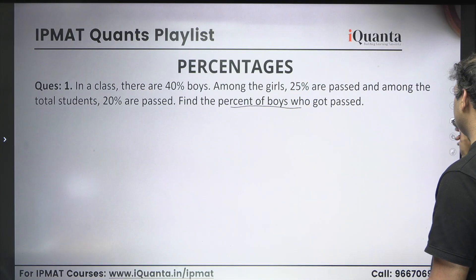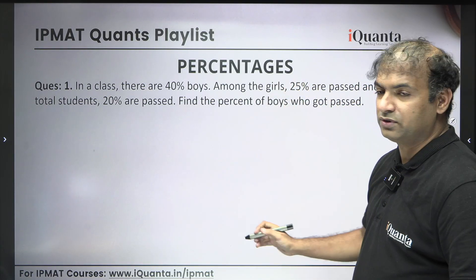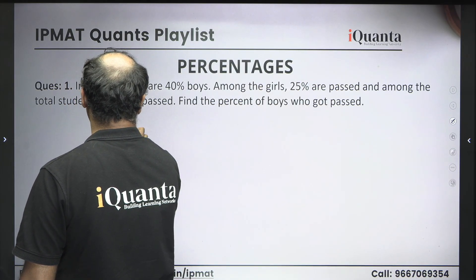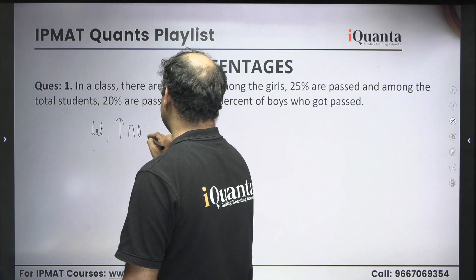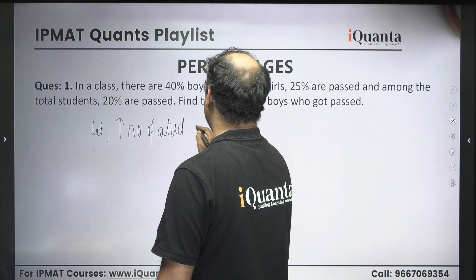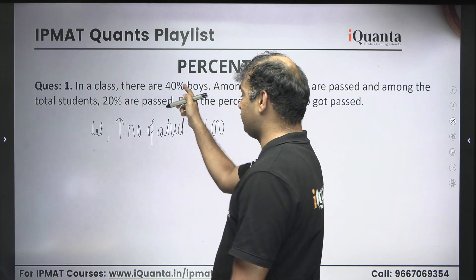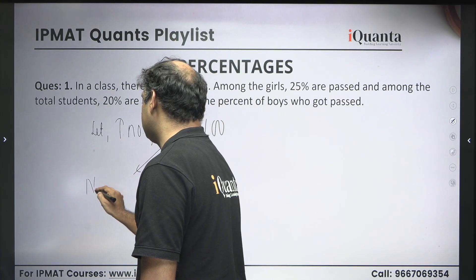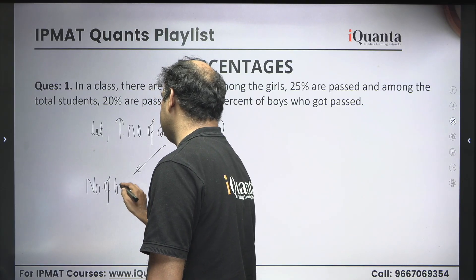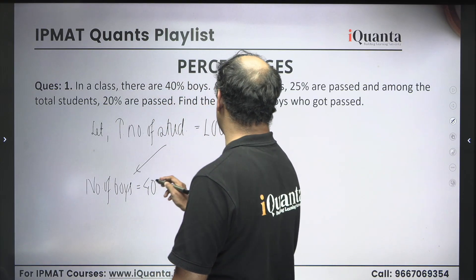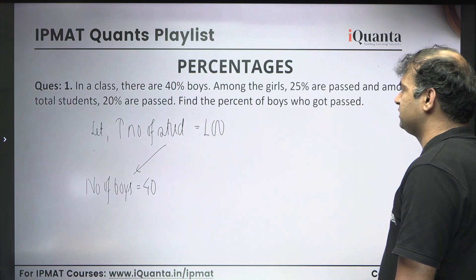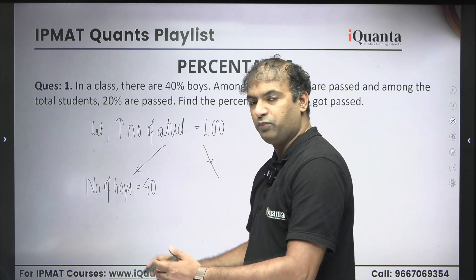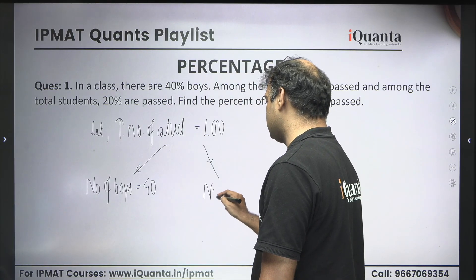So how do we start assuming? The question starts from the total students in the class. So let us assume the total students are 100. Now they are saying that in the class, 40% is boys. That means the number of boys should be 40 — very obvious. And they are also saying that among the girls, 25% have been passed. What should be the number of girls? Out of total students 100, if boys are 40, obviously the number of girls should be 60.